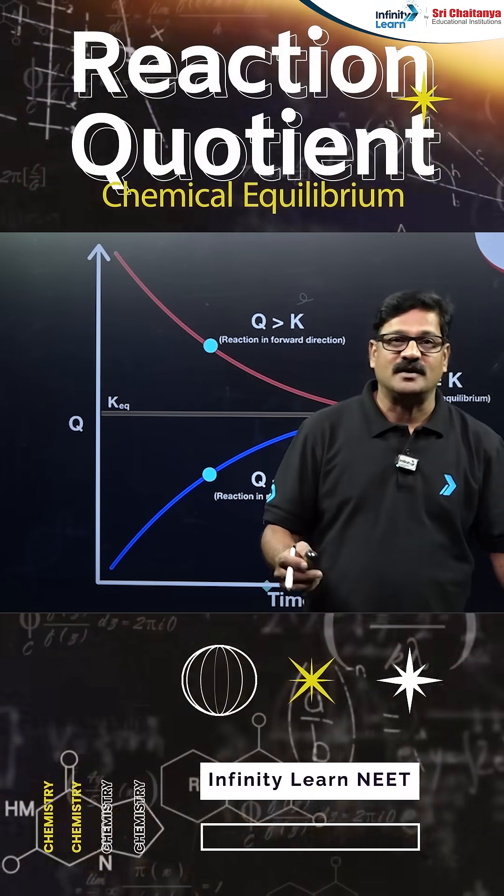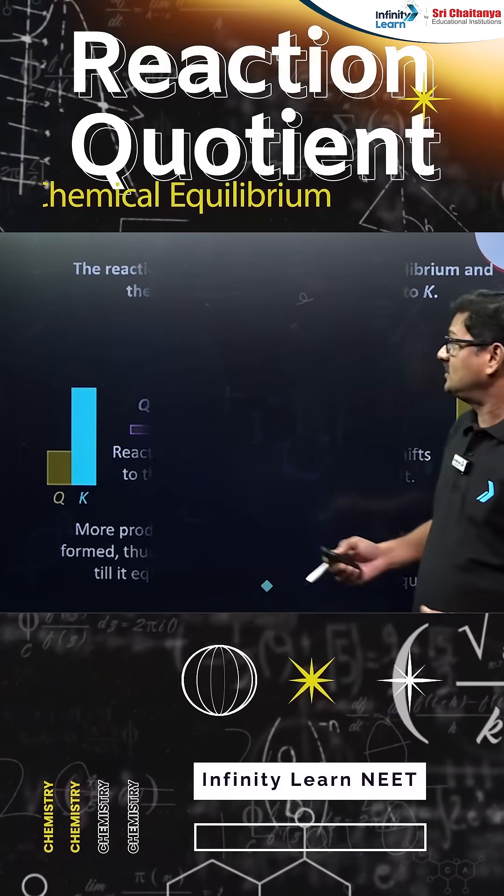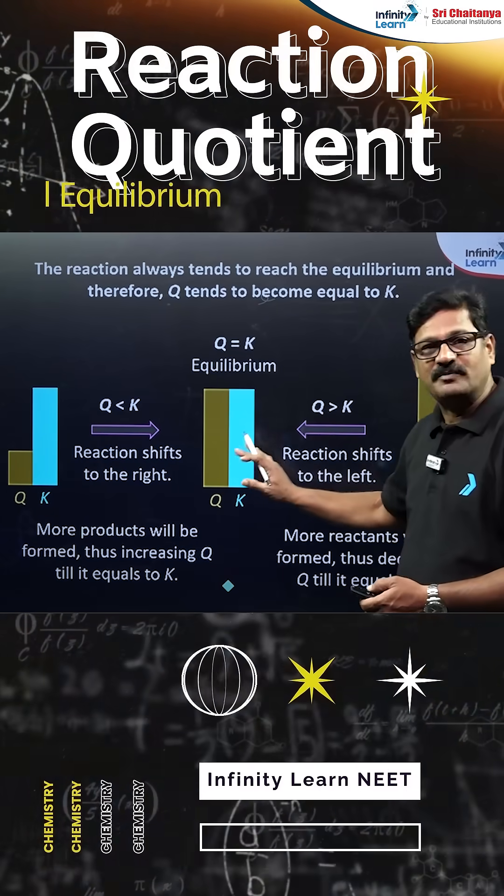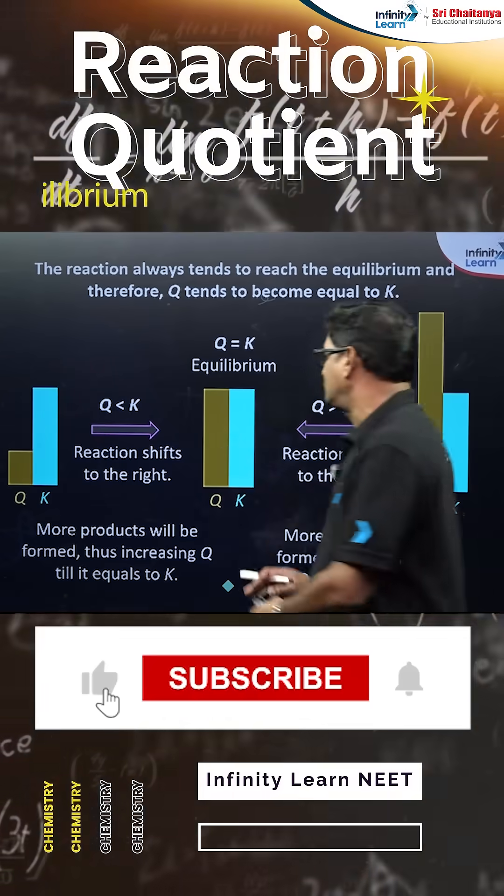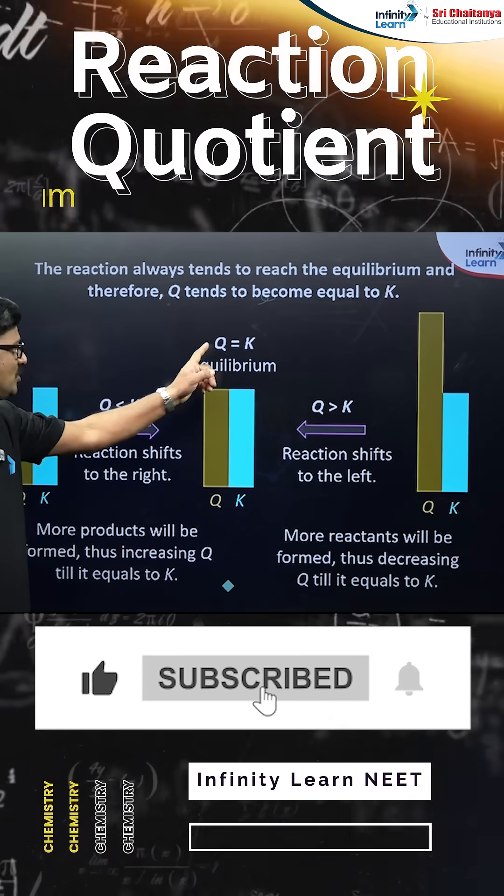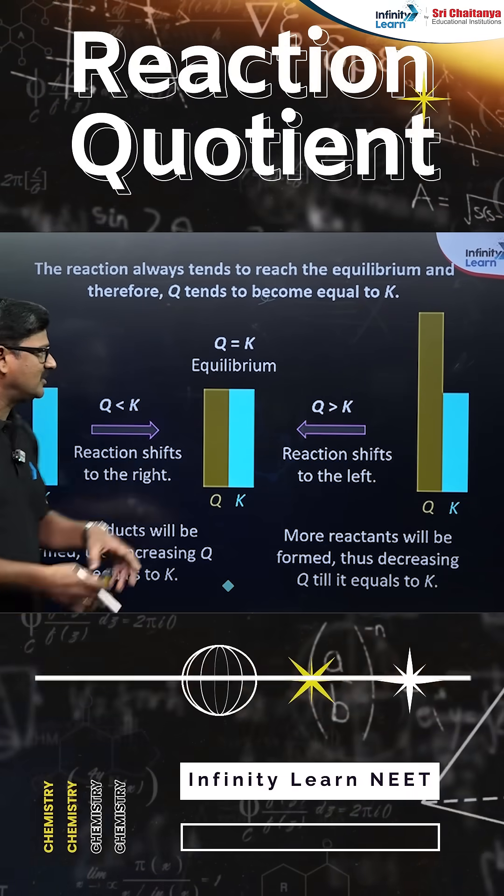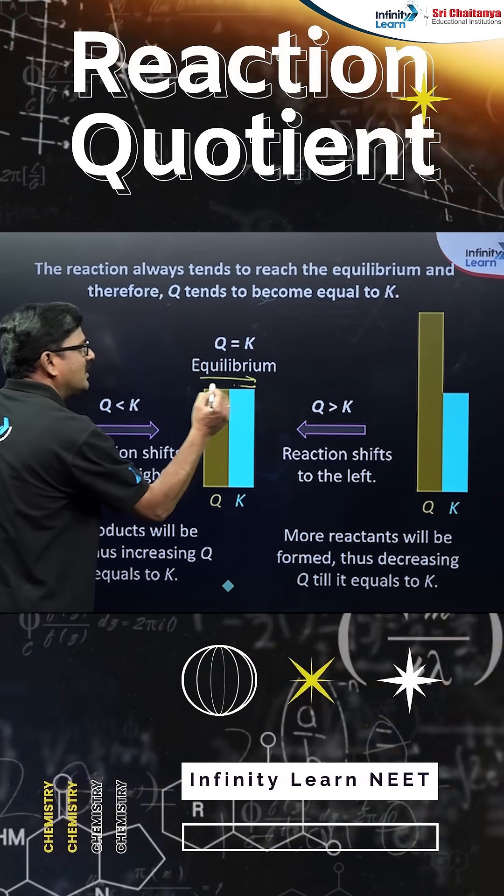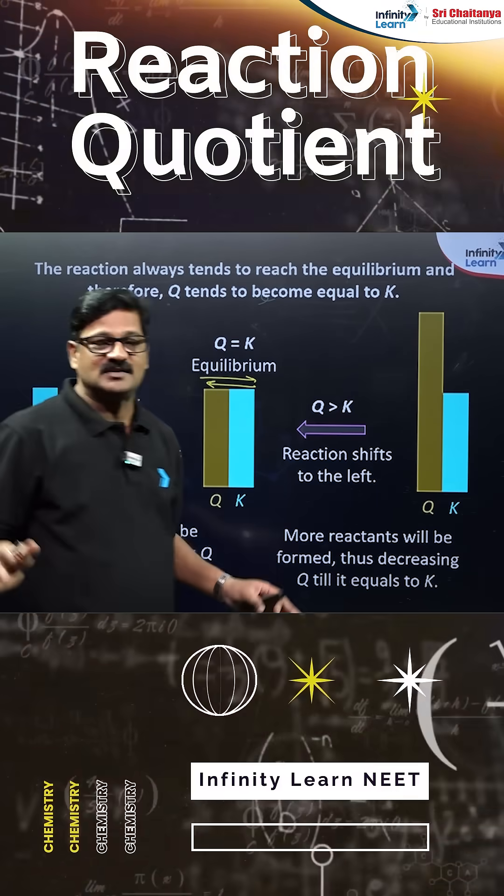At Q equals K, the state of equilibrium, both forward and backward reactions simultaneously take place at equal rates. When Q is less than K, the reaction favors the forward direction, producing more products.